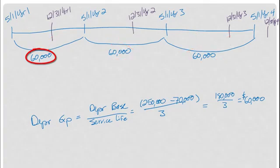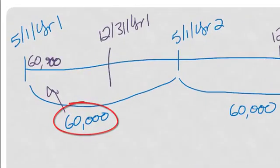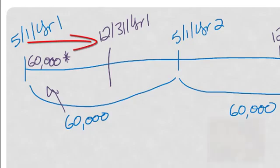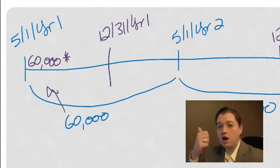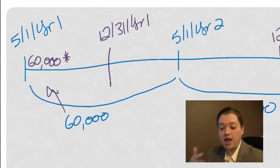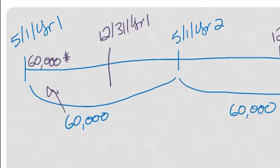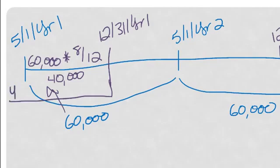So I'm going to take this $60,000, and I'm going to multiply it by the number of months from May to December. And I always count this out on my fingers because I mess it up too often when I try to do it in my head. May, June, July, August, September, October, November, December. So 8 out of 12 months. So I'm going to multiply that 60,000 by 8 twelfths. So 60,000 times 8 over 12 is 40,000. And that's the depreciation expense I will recognize in year 1.